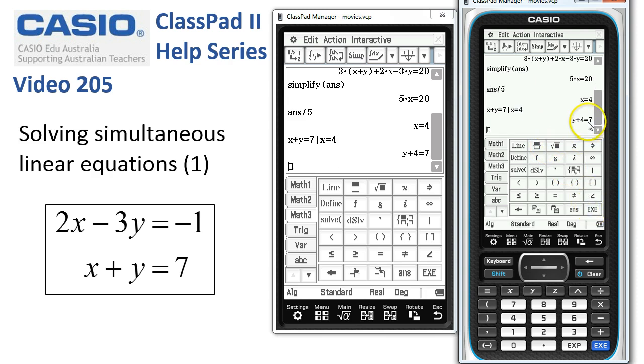So what's y? Well, we need to subtract 4 from both sides. Here we go, subtract 4, tap execute, and there's our y coordinate: y = 3.